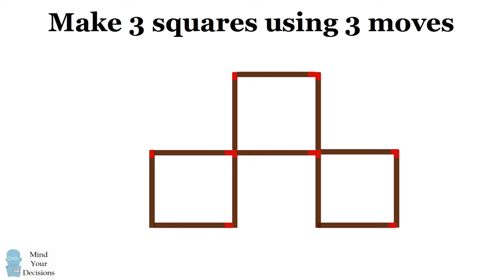And what we have is a shape that has three squares of equal size. Now due to the symmetry of the problem, you could have also found this by moving three other sticks. You may have also come up with the same shape upside down. But this is the basic solution. Did you figure it out?